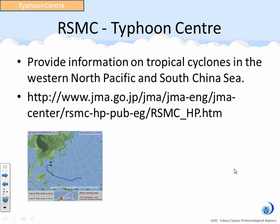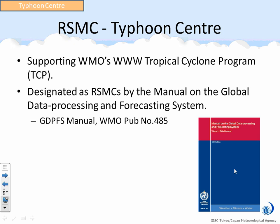Typhoon Center provides information on tropical cyclones in the Western North Pacific and the South China Sea, including present and forecast position, as well as the movement and intensity of tropical cyclones. RSMC Tokyo Typhoon Center is a DCPC supporting WMO's World Weather Watch Tropical Cyclone Program, TCP. The activities are required by the manual on the Global Data Processing and Forecasting System, GDPFS. And Tokyo is designated as RSMC for tropical cyclone-related activities.